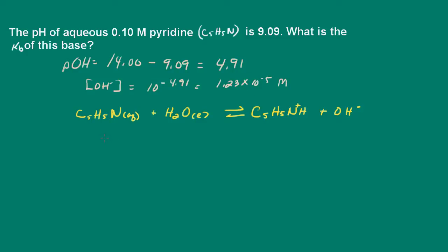Now what I'm going to do is I have the concentration of the hydroxide ion, and it's at equilibrium. So let's go ahead and set up our ICE table. So the initial concentration of the pyridine was 0.1 molar.